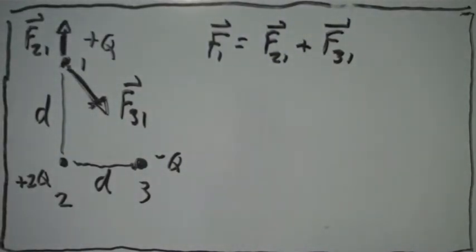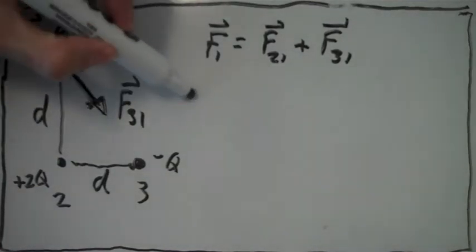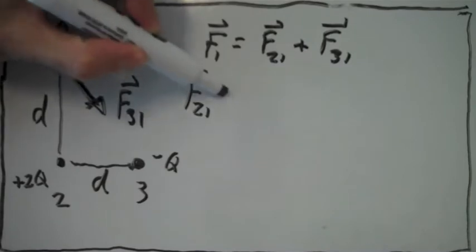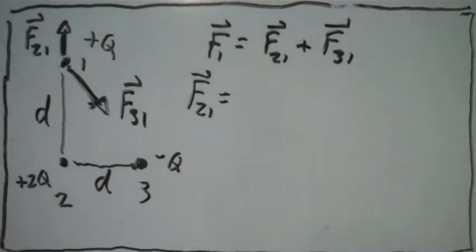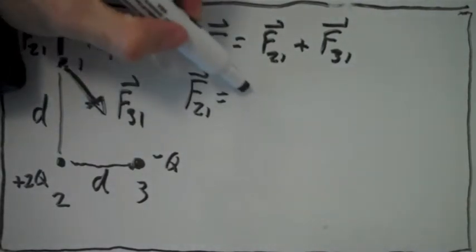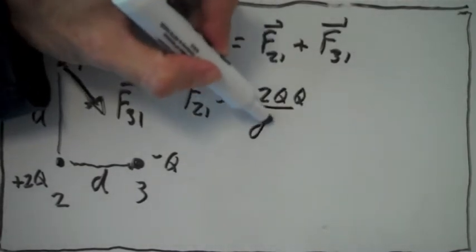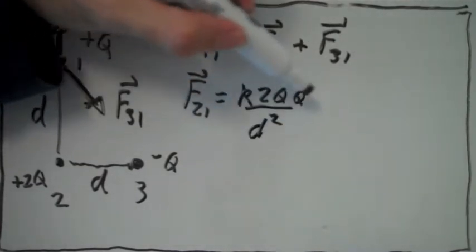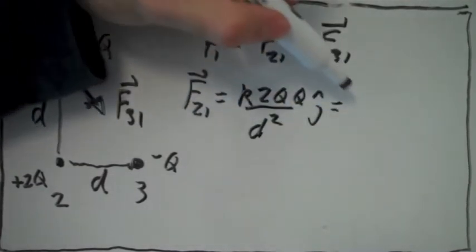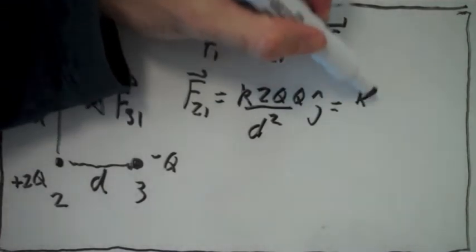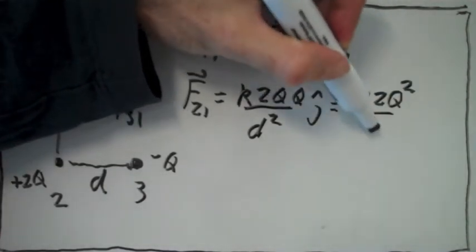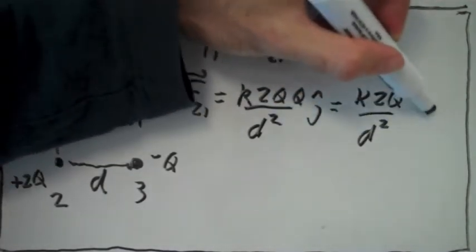First, we find the force of charge 2 on charge 1. That's given by k times charge 2 times charge 1 divided by the distance squared. It's pointing in the j direction — straight up.